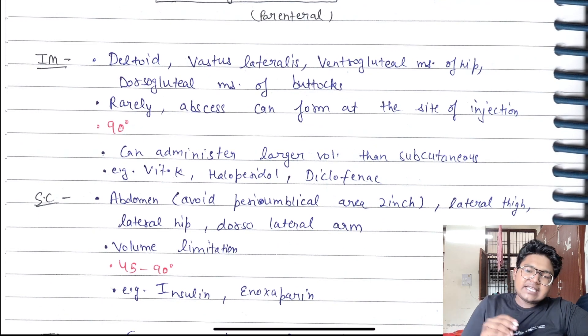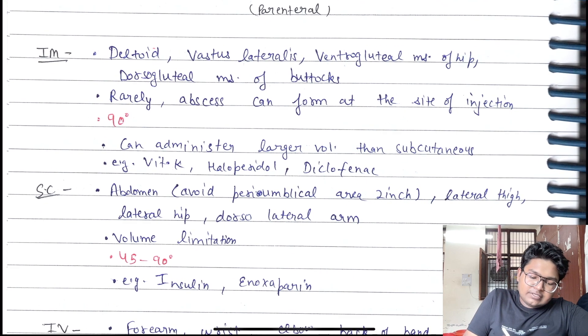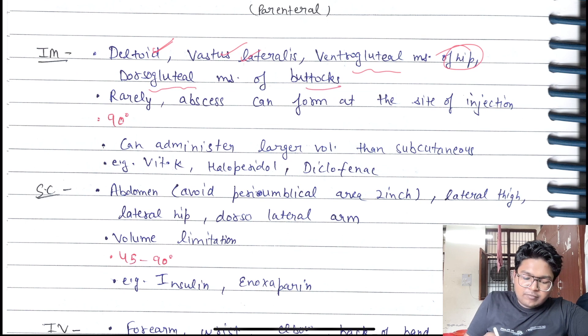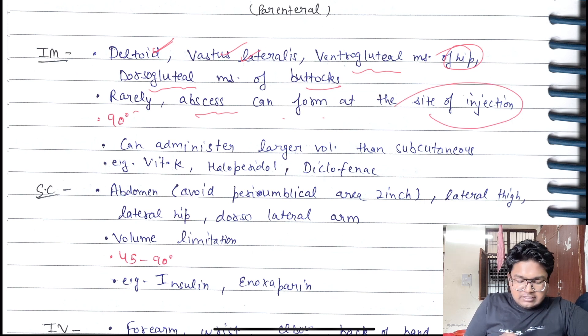First of all, we have IM. IM injection can be introduced in deltoid muscle, vastus lateralis muscle, gluteal muscle, dorsogluteal muscle of buttocks. Rarely, abscess can form at the site of injection. At 90 degrees, we have to inject.